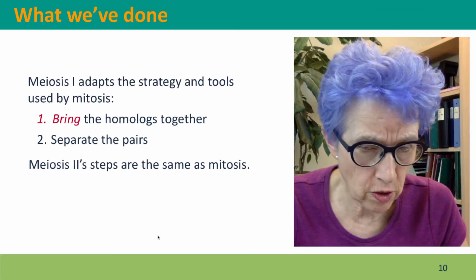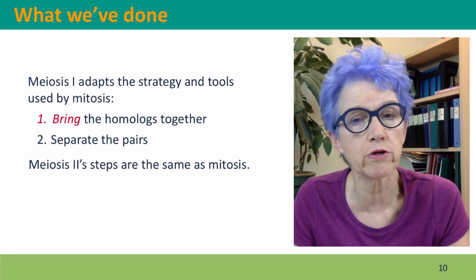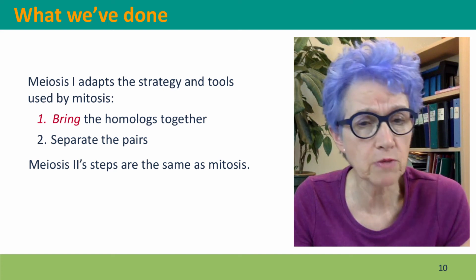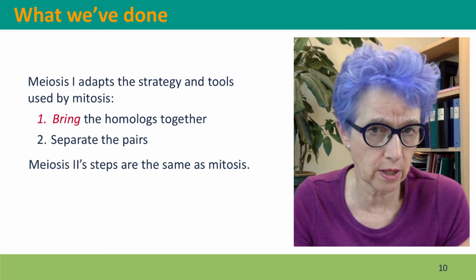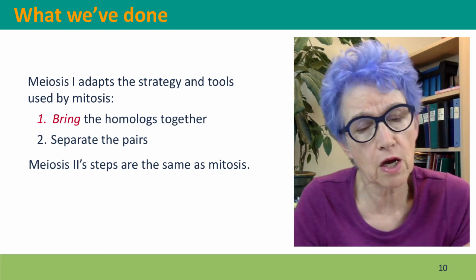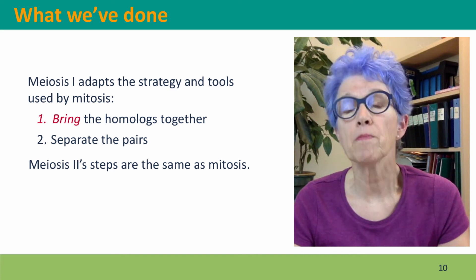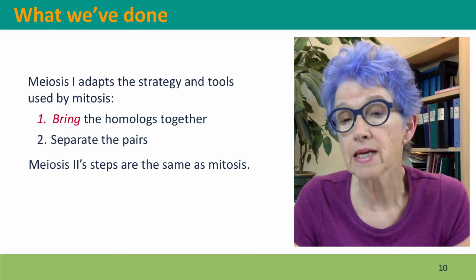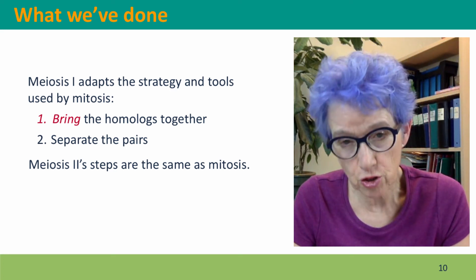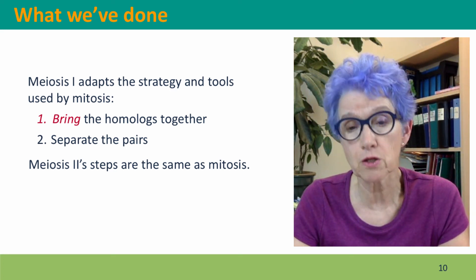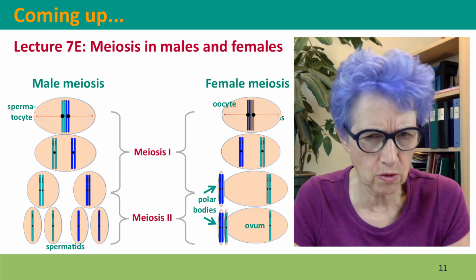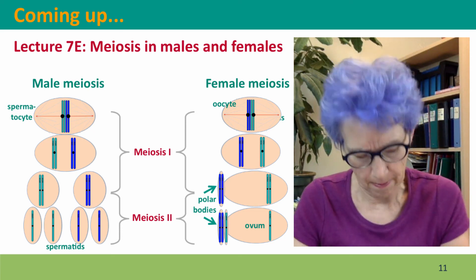We've talked about how meiosis adopts the same strategy and tools used by mitosis. The homologues weren't together, but meiosis brings them together and locks them in the same way that sister chromatids are locked together in mitosis. The spindle fibers attach to the pair of homologues using the same tug-of-war, pulling homologues to the center and then apart so each daughter cell gets one version of each homologous chromosome. Meiosis two then separates the sister chromatids in exactly the same way mitosis does. Coming up next, we'll think about how this plays out differently in males and females. Hope to see you there.